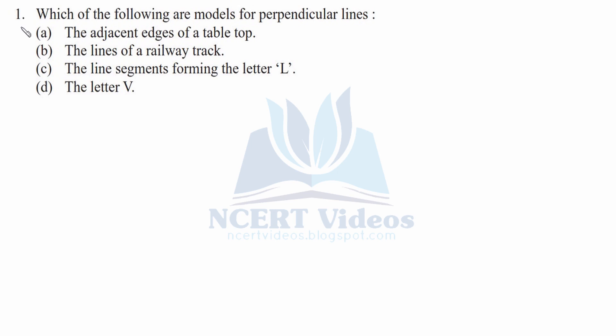Question 1: Which of the following are models of perpendicular lines? The options are: (a) the adjacent edges of a tabletop, (b) the lines of a railway track, (c) the line segments forming the letter L, and (d) the letter V.